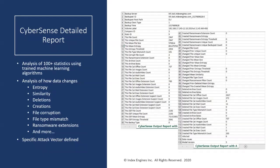You don't need to review all of these, but they give you a sense of the detail CyberSense analyzes when it scans the backup image — entropy, file extension mismatch, deleted file counts, file sizes, and many other details that are indicative of a cyber attack.